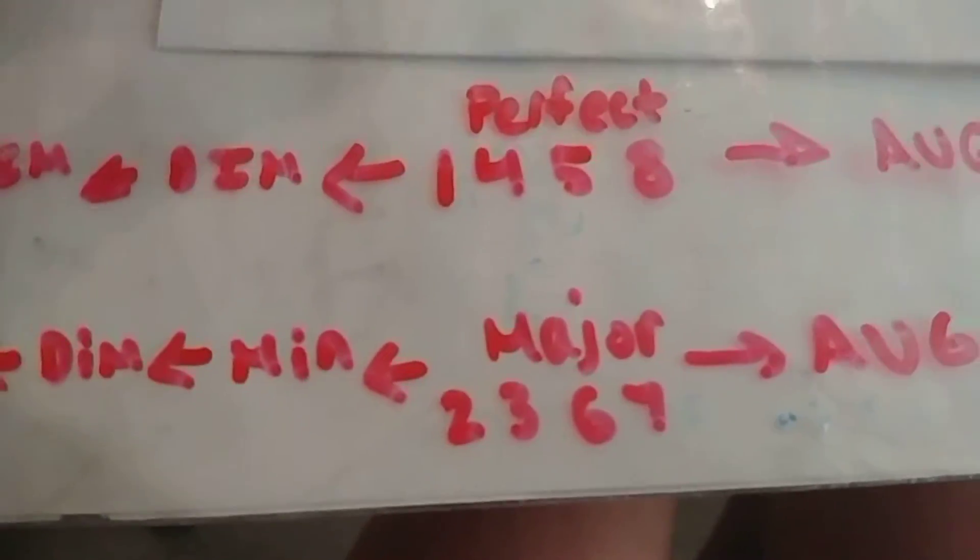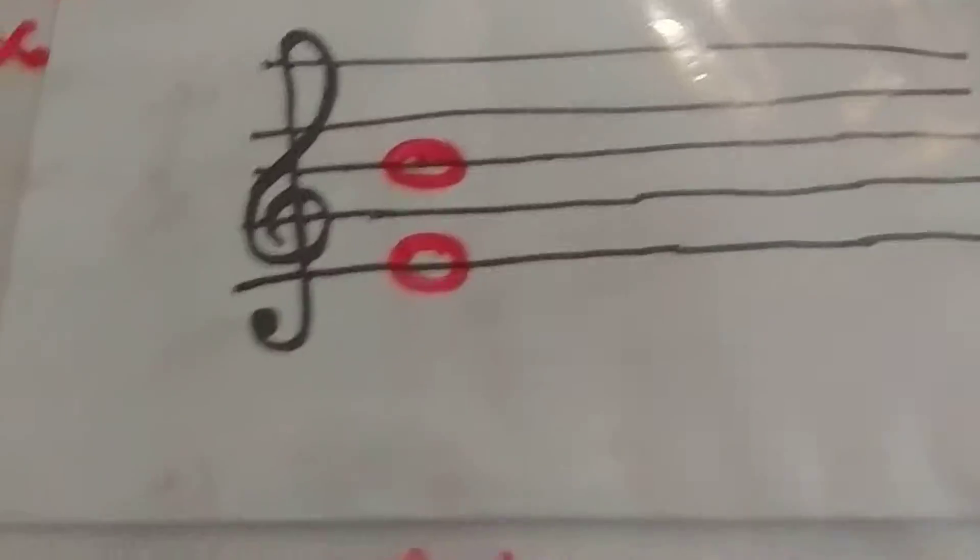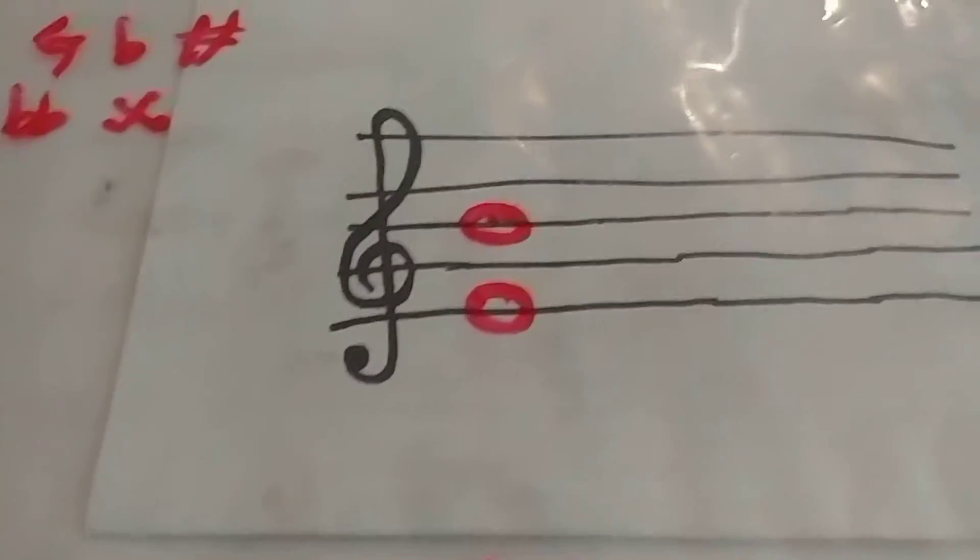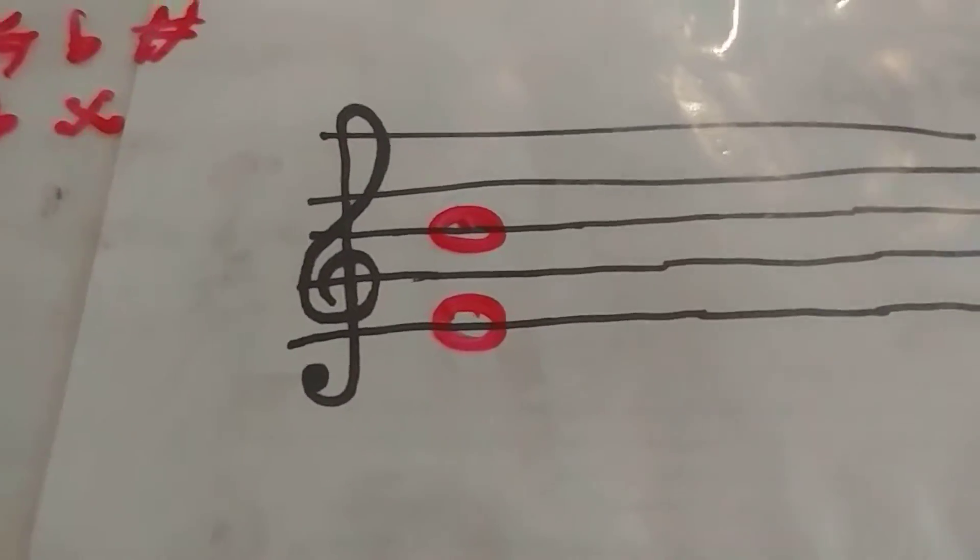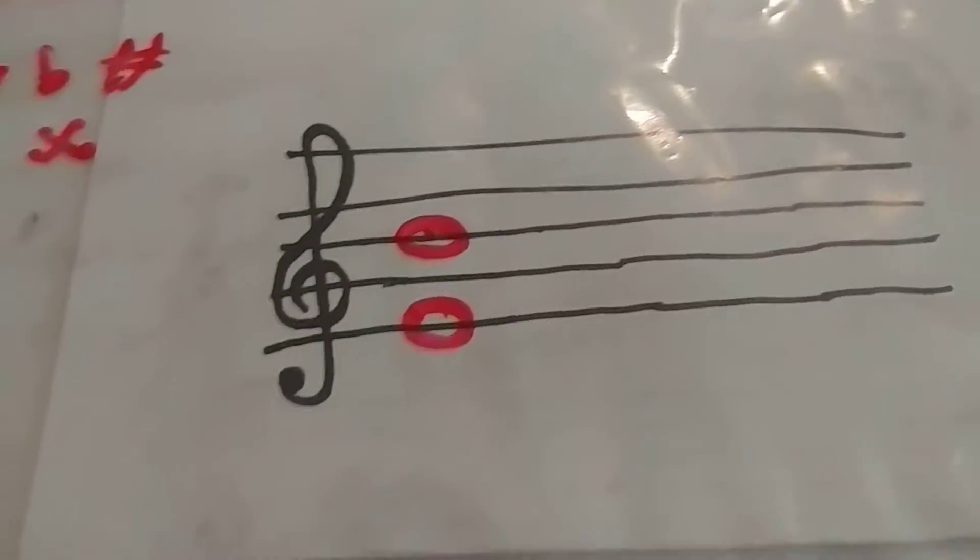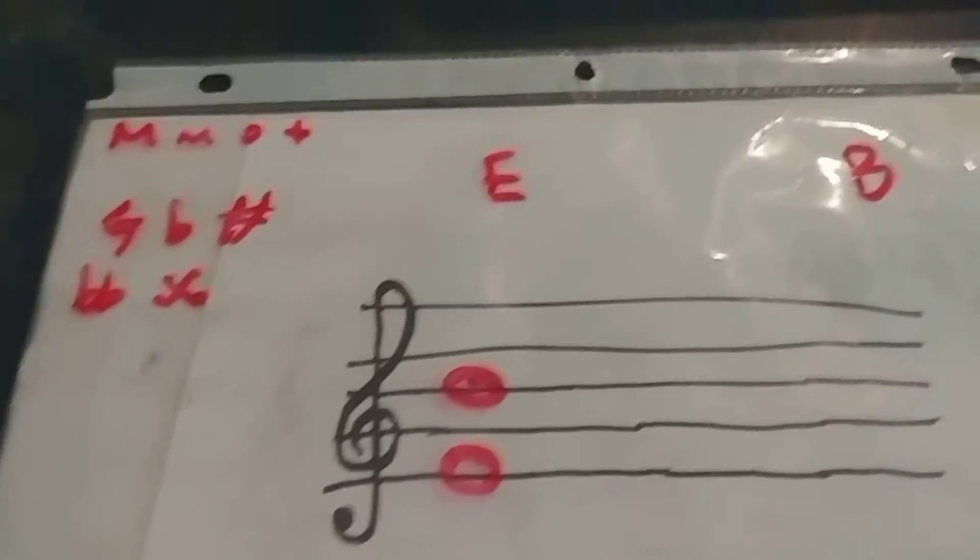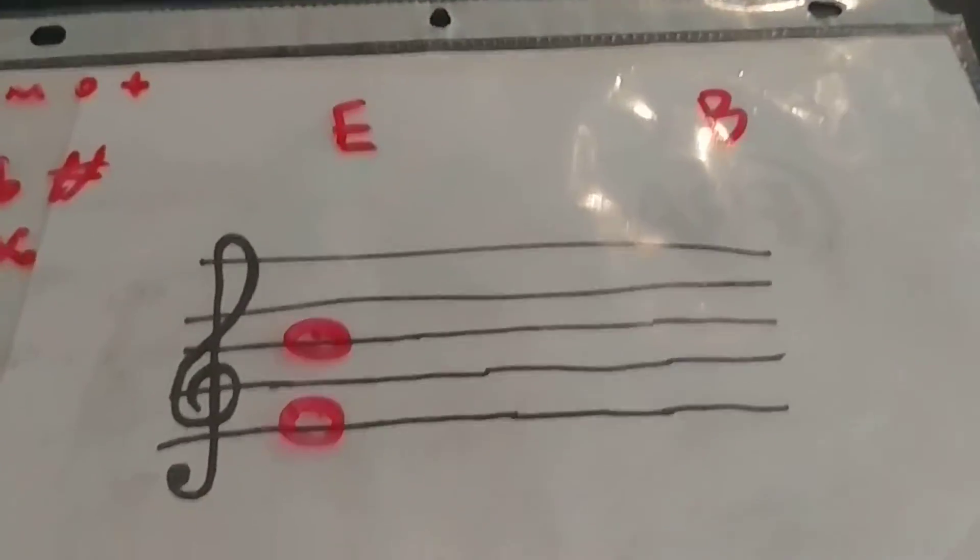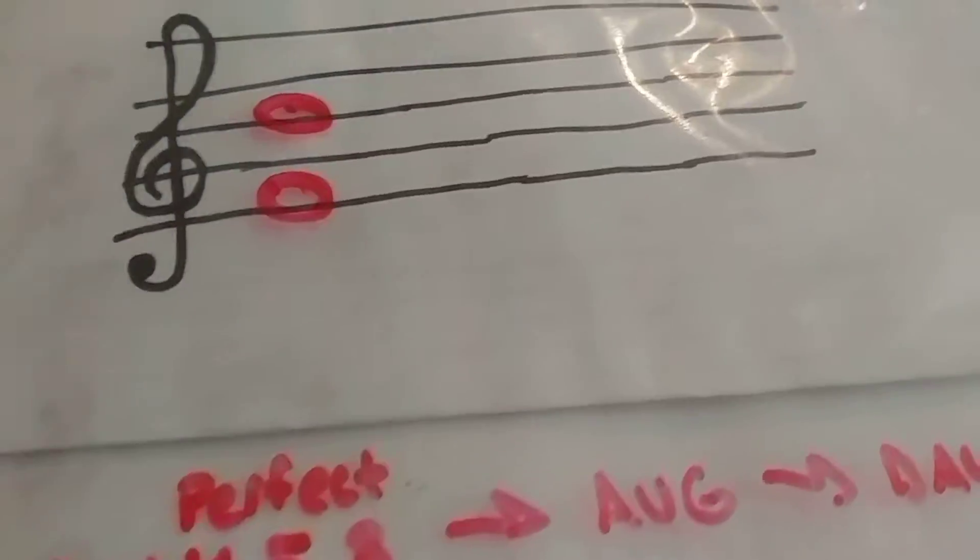Let me draw some notes here. Okay, this is the treble clef, and if you see these two notes, they have no accidentals on them, what is the interval between them? Well, the notes we see here are E and B. So they are E and B. Well, what are the notes in between those? They are F, G, and A.